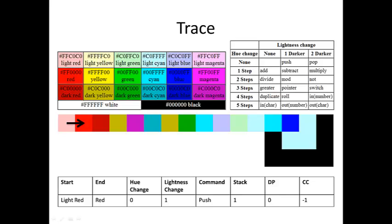We are going to start to trace our first program. As you can see, we are starting on the light red CODAL, which is in the upper leftmost corner, and going to the red CODAL. There is no hue change, and there is a lightness change of one. Going from light red to red results in pushing one onto the stack. The direct pointer has a value of zero, which means it's pointing to the right, and the CODAL chooser has a value of negative one, which means it's pointing to the left.